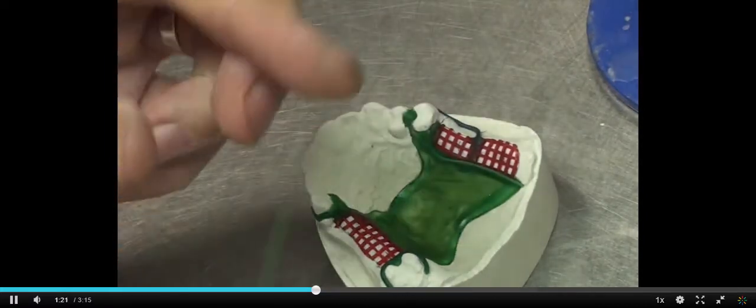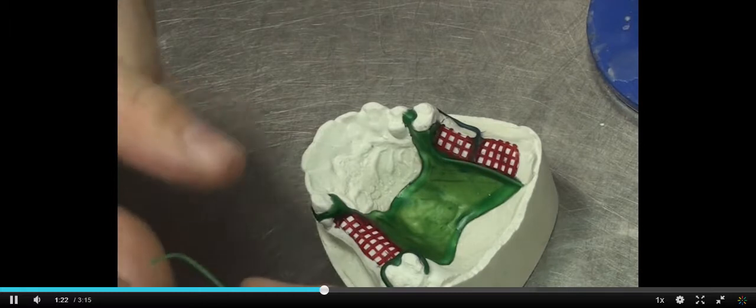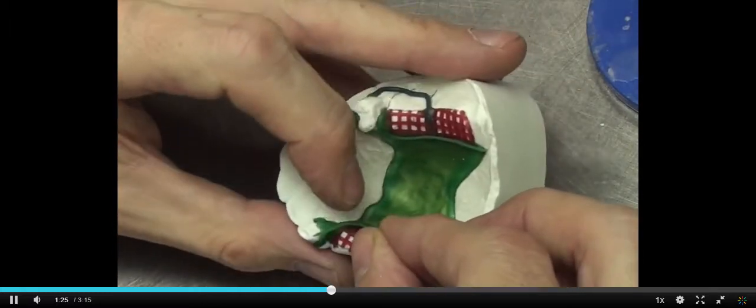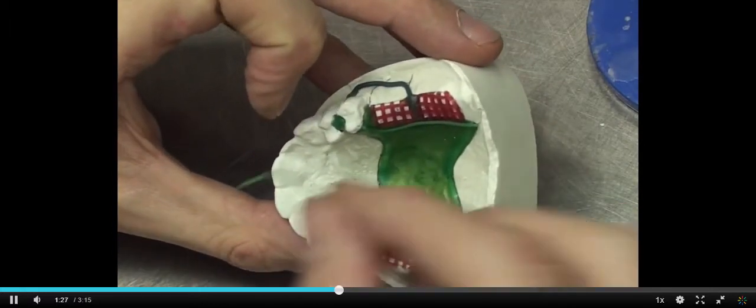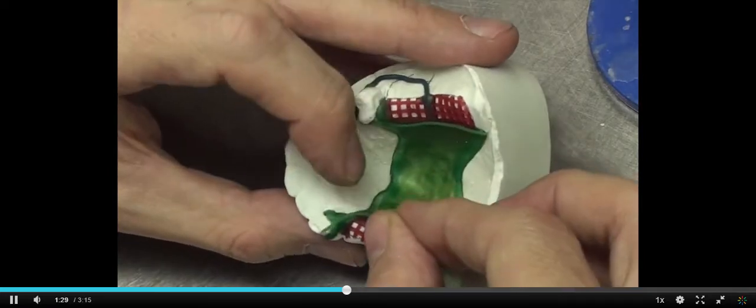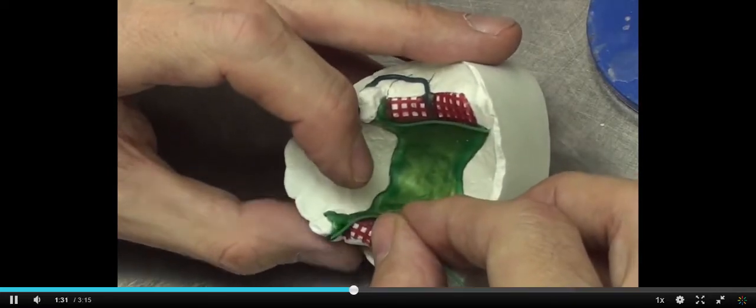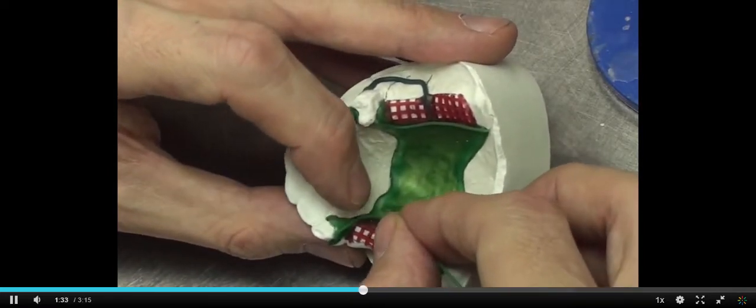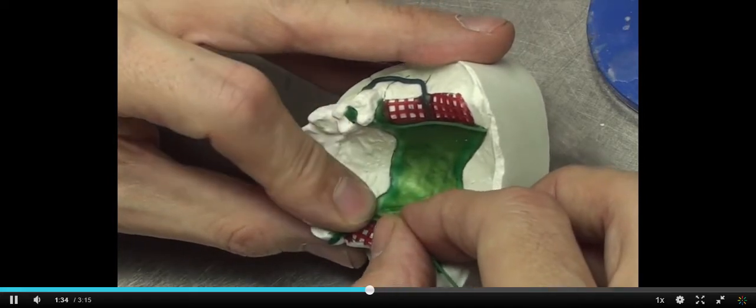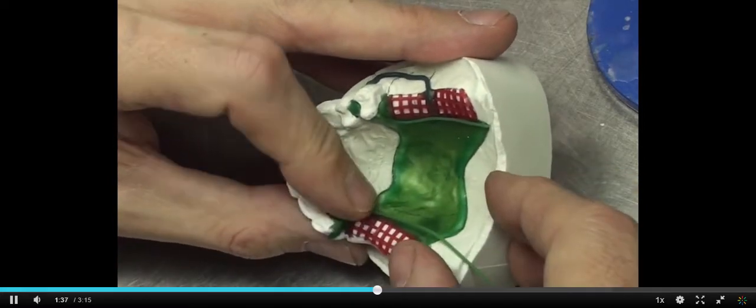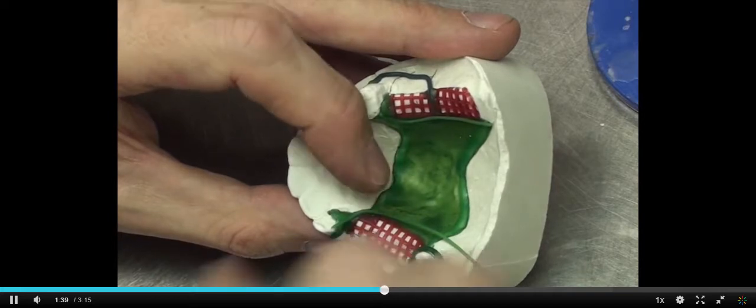We're going to run through the distal of the canine, and you must have wax underneath it. You can attach this to a dry model. Just don't bring it around the side of the tooth, don't wrap it onto the proximal area. Try and introduce a little bit of shade.